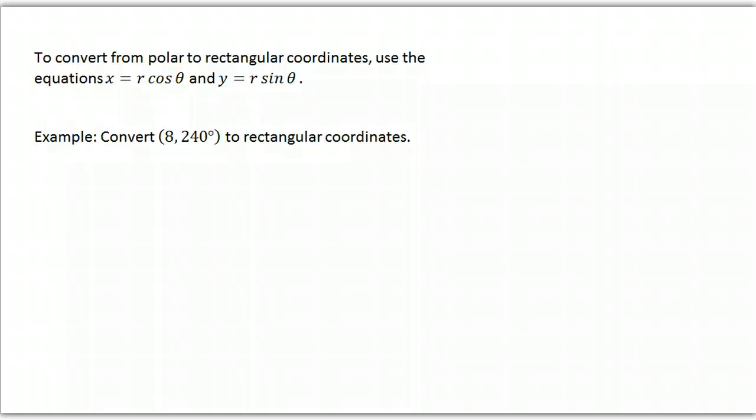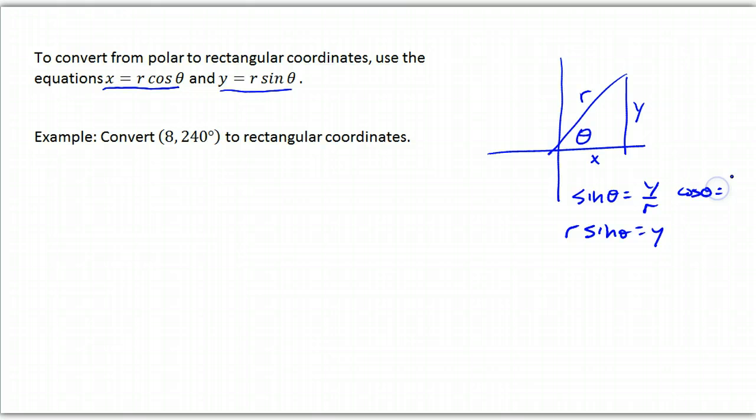So we can convert back and forth between polar and rectangular. To convert from polar to rectangular, you're going to use these two equations: x = r cos θ and y = r sin θ. That's because, if you recall, there's r, there's θ, and here's x, and here's y. And so the sine of θ is y/r, or r sin θ = y. And the cosine of θ equals x/r, so r cos θ = x. So they come from the definition of sine and cosine.